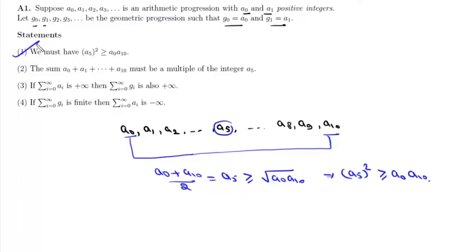Now statement 2 is: the sum a0 + a1 up to a10 must be a multiple of the integer a5. As stated previously, (a0 + a10)/2 = (a1 + a9)/2, and will go all the way up to (a4 + a6)/2, and all will equal a5. So this sum S can be expressed as 2a5 five times plus a5, which is simply 11a5, which is a multiple of integer a5. That means statement 2 is also correct.